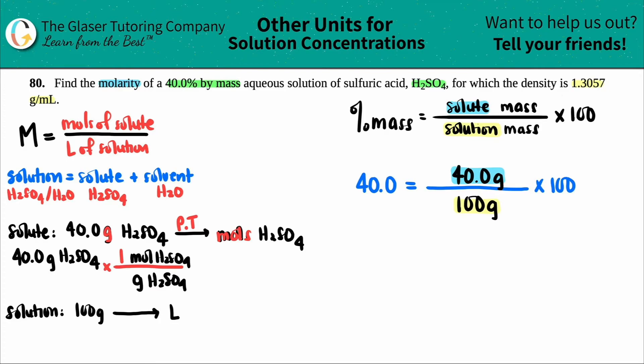The units cancel. The numbers don't cancel. So all you have to do is 40 divided by that 98. I'm going to get 0.4078. That's moles of the H2SO4, the solute. So my number on the top is now 0.4078 moles.